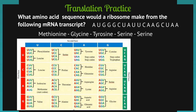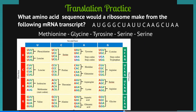If you were a successful ribosome, this is what you would have come up with: an order of five amino acids — the beginning of a protein. Remember, this order of amino acids will fold into a complex three-dimensional shape and then go perform one of the many functions of proteins.